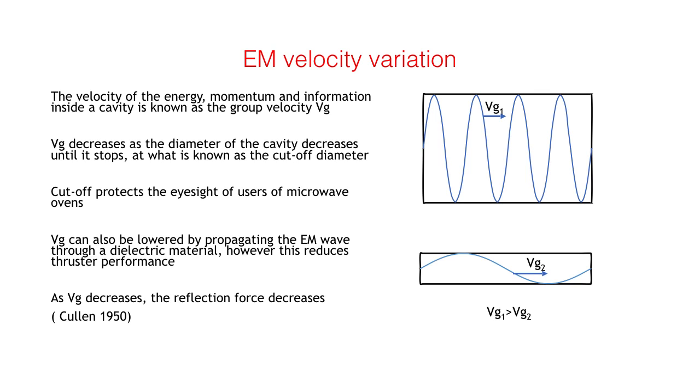Vg can also be reduced by inserting a dielectric element into the cavity, however this does reduce thrust performance. In 1950, Cullen proved by experiment that the radiation pressure decreases as Vg decreases.